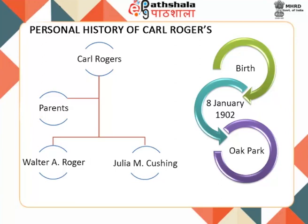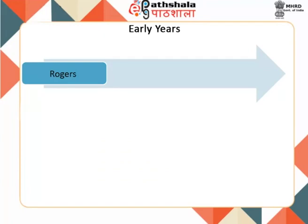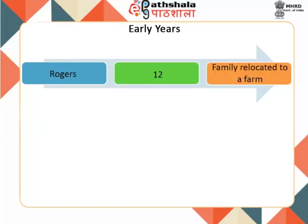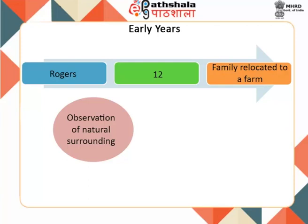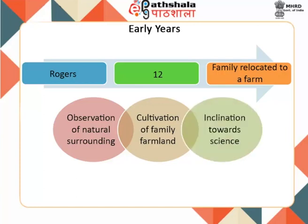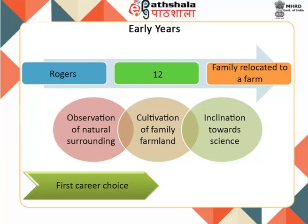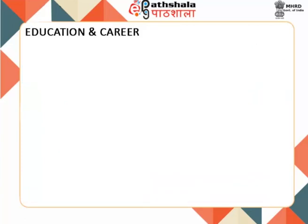Carl had no close friends outside the family before college. Once Carl turned 12, his family relocated to a farm approximately 30 miles west of Chicago, where he spent his adolescence. During this period, his observation of the natural surroundings and cultivation of the family's farmland developed in him an inclination towards science. With a strict upbringing, Carl became rather isolated, independent, and self-disciplined, such that his first career choice was agriculture.